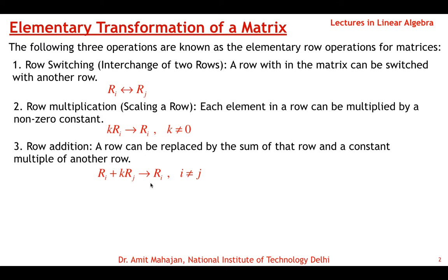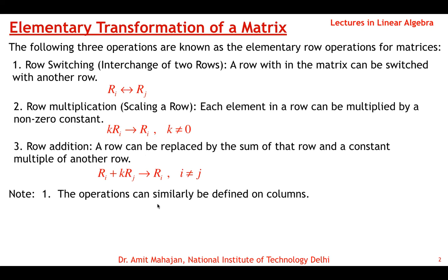These three operations are applied on rows. Similarly, we can define analogous operations on columns: column switching where the i-th column is interchanged with the j-th column, scaling of a column where the i-th column is multiplied by a non-zero constant, or adding one column to k times another column with impact on one of the columns.